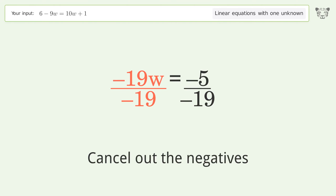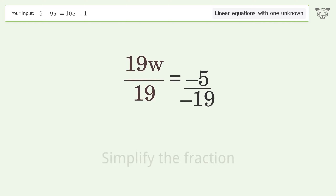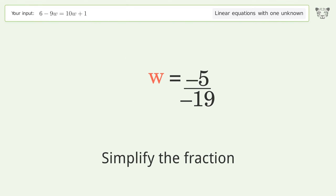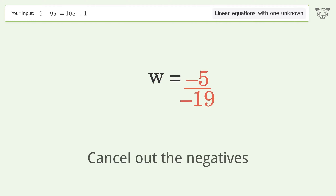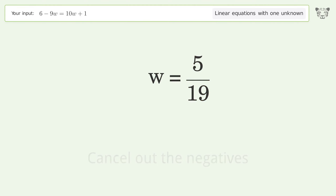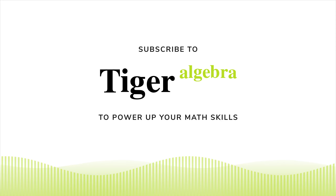Cancel out the negatives. Simplify the fraction. Cancel out the negatives. And so the final result is w equals 5 over 19.